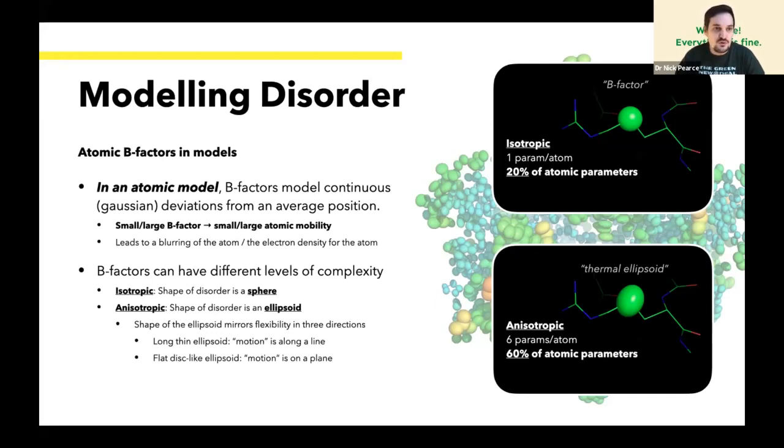These are the isotropic B-factor where the disorder is modeled as a sphere, so that's a univariate Gaussian, the same in all directions. Or an anisotropic B-factor where the shape of the disorder is an ellipsoid, and now you can have variation in the disorder of your atom. So one axis might have more disorder or motion in it compared to the others. You can imagine the disorder of the atom is in the shape of an ellipsoid or a disc.